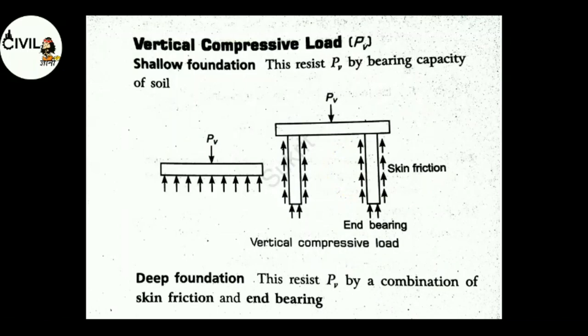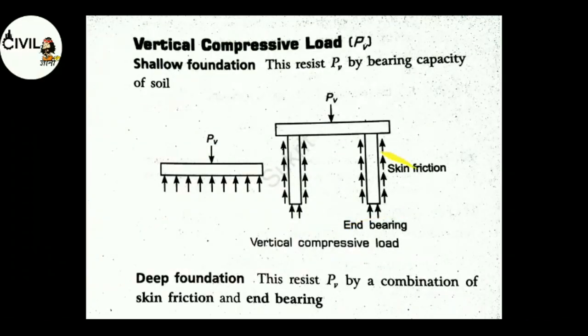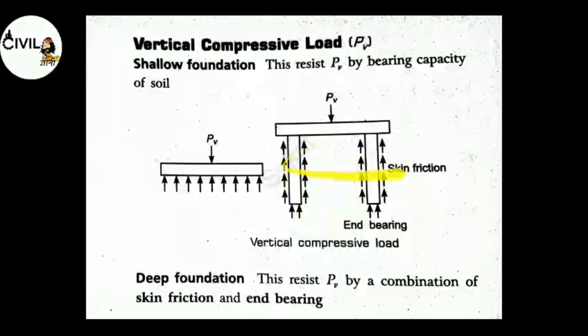In deep foundation, PV is resisted by end bearing and skin friction. The arrow represents end bearing and the side resistance is skin friction.